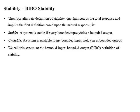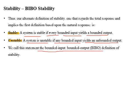We will define stability on the basis of bounded input and bounded output. Under BIBO stability, a system is said to be stable if every bounded input gives a bounded output. A system is said to be unstable if any bounded input gives an unbounded output. So if there exists any single bounded input for which our system gives an unbounded output, then our system is unstable. And for every bounded input, if we get a bounded output, then our system is stable. This is called the bounded input bounded output definition of stability.